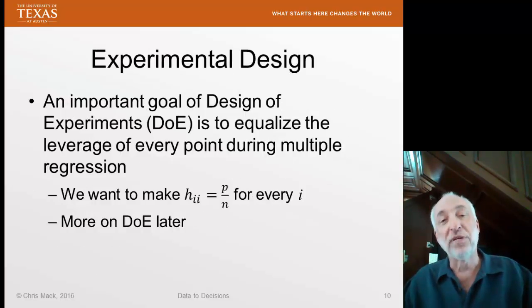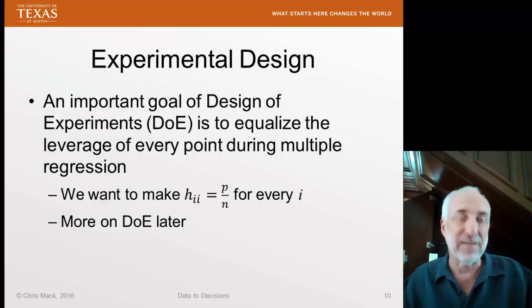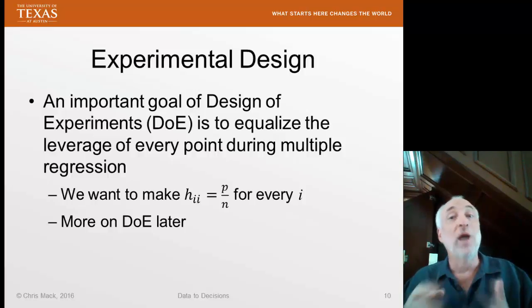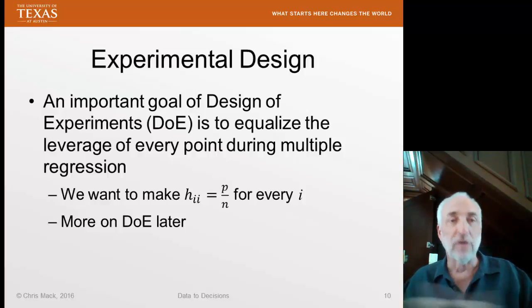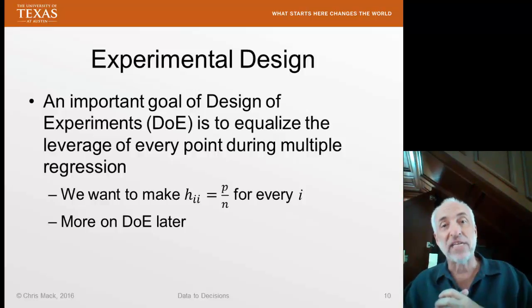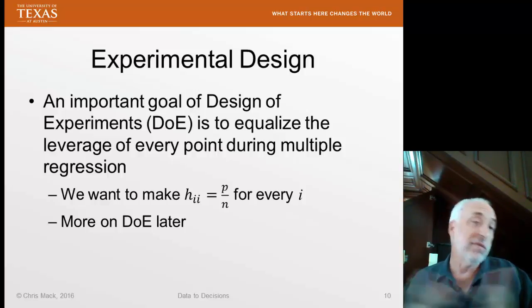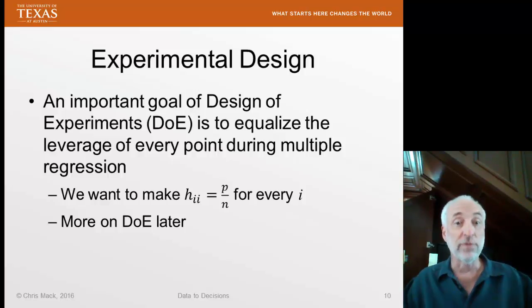A final topic I'll mention, also a preview of things to come. We're going to talk about design of experiments. Design of experiments is what X values should you use when designing your experiment. If you're doing an observation, the X values are whatever they are, the predictor variable values. But if you're doing your own experiment, you can decide what range, how to space out the values of X. One of the goals of design of experiments is to make the leverage of every single point the same. In other words, we make every HII exactly equal to P over N for every I. That means we don't have to worry about leverage or influence in our data points other than the possibility of outliers. Again, we'll talk about design of experiments later in the semester.